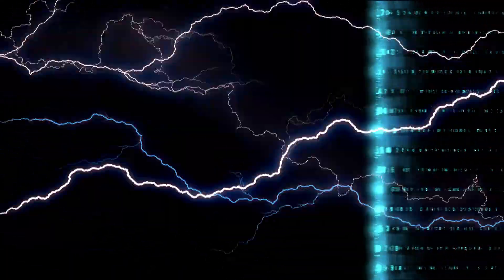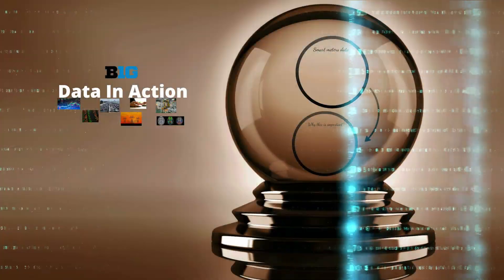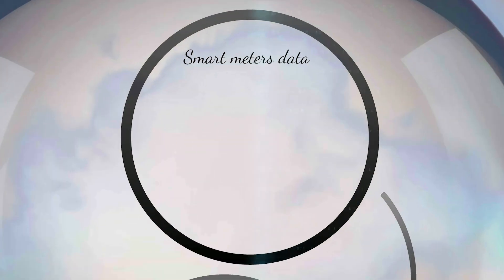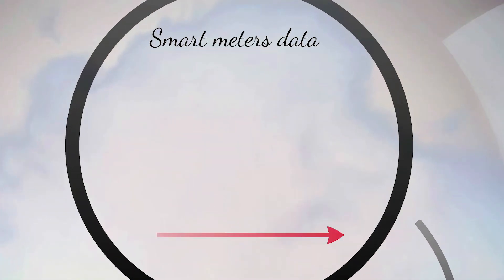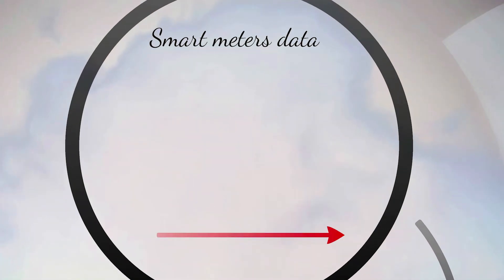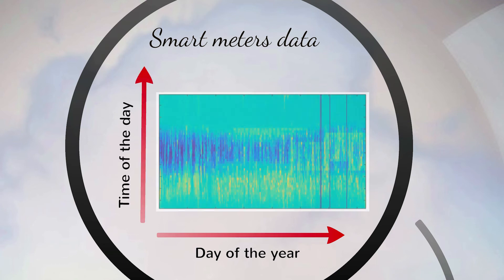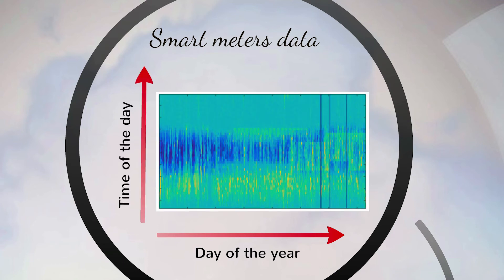When we talk about electricity data, almost every house in Victoria has been deployed with a smart meter that reports data every half an hour. So consider that we have 48 readings per day, per house — and we have this for a year or for many years.